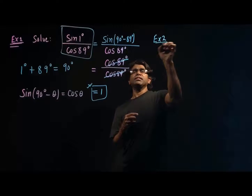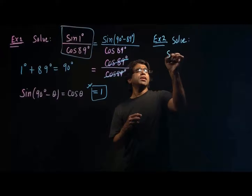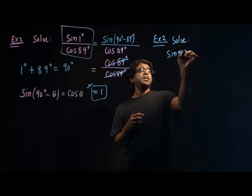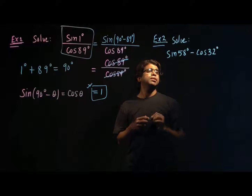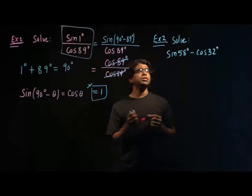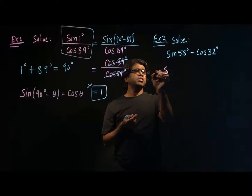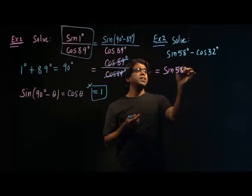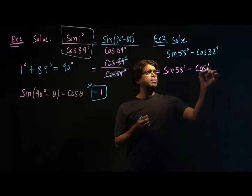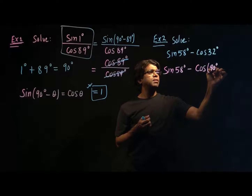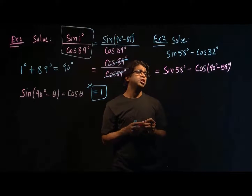My second example is: solve sine 58 degrees minus cosine 32 degrees. I'm going to use the complementary formula. I'll rewrite cosine 32 degrees as cosine of 90 degrees minus 58 degrees, because 90 minus 58 equals 32 degrees.